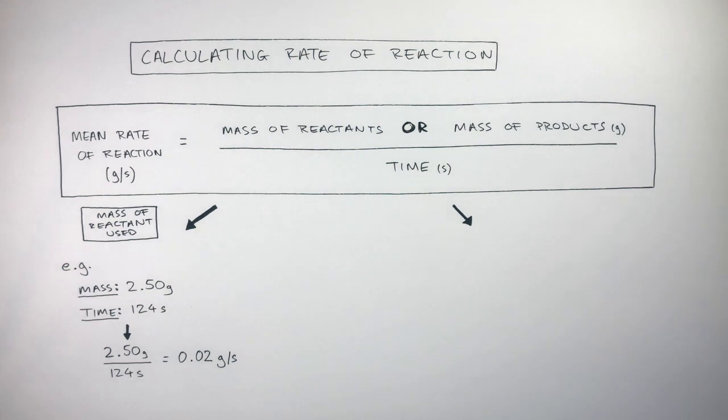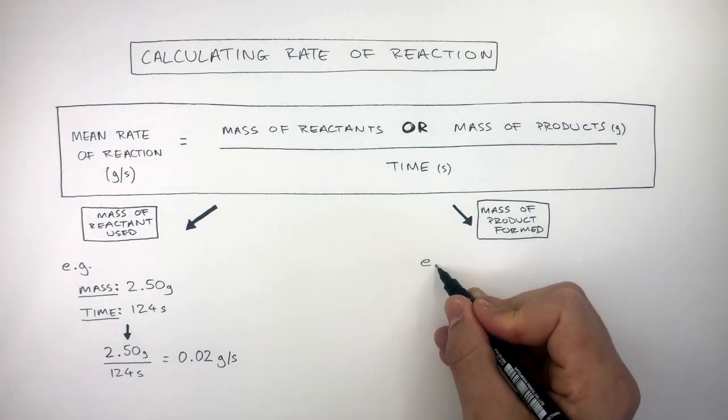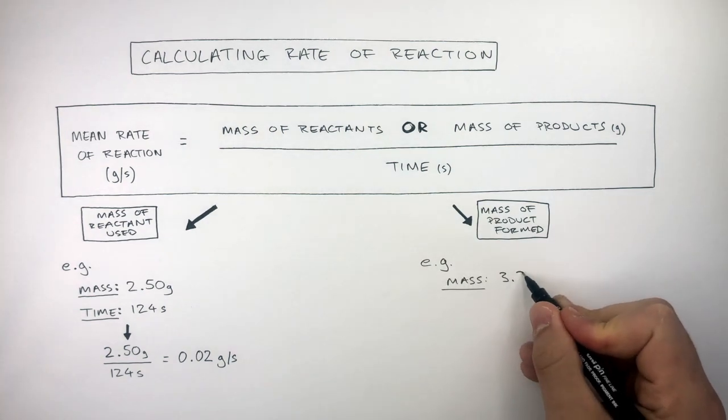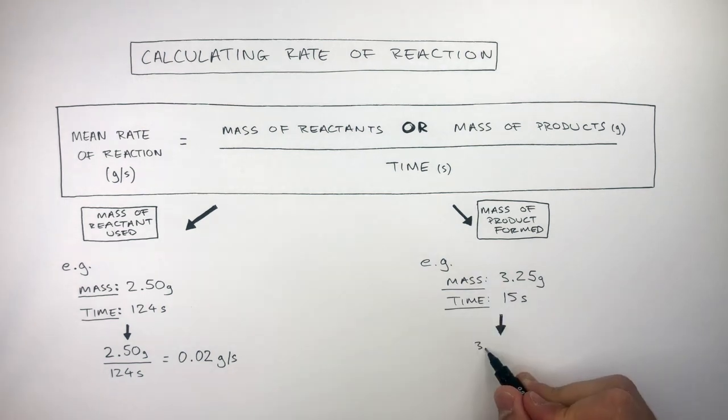Let's now apply this equation when we're thinking about mass of product formed. For example, if the mass is 3.25 grams and the time is 15 seconds, we do 3.25 divided by 15, which equals 0.217 grams per second.